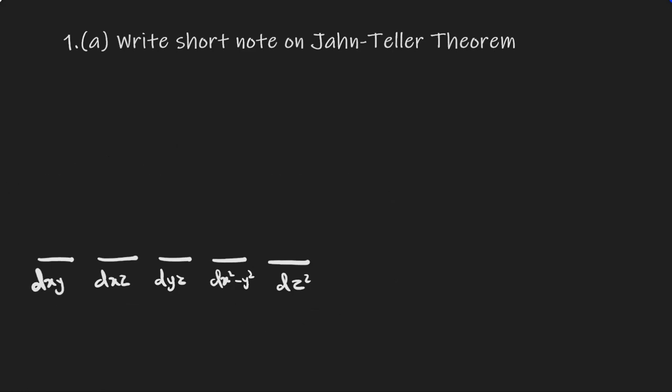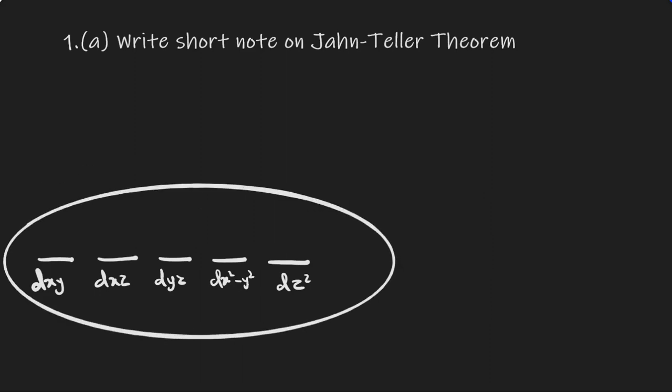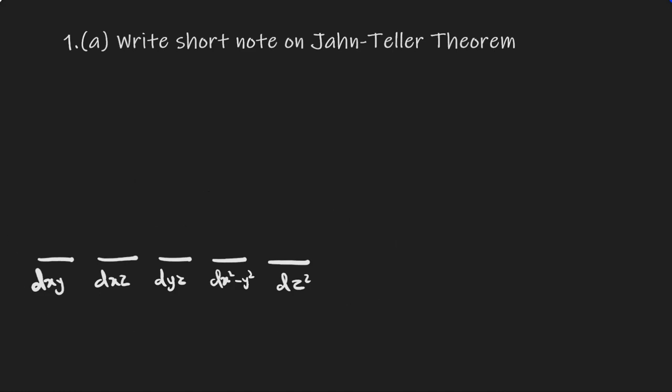But what happens if the shape of the molecule or the shape of the central metal changes and is no longer linear? Since we say the central metal is linear, that's why they have the same energy. Jahn-Teller theory states that any non-linear molecule or system in a degenerate electronic state will be unstable and would undergo distortion to form a stable molecule or lower energy system, thereby removing the degeneracy.